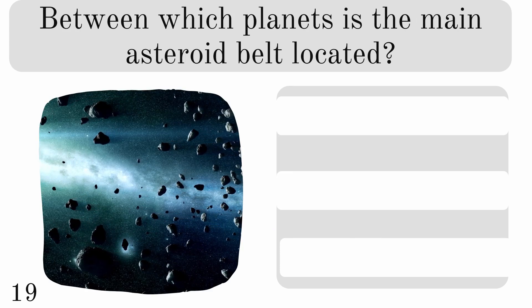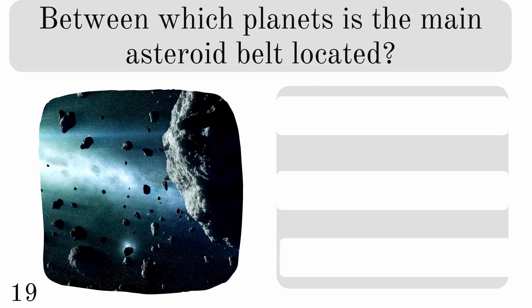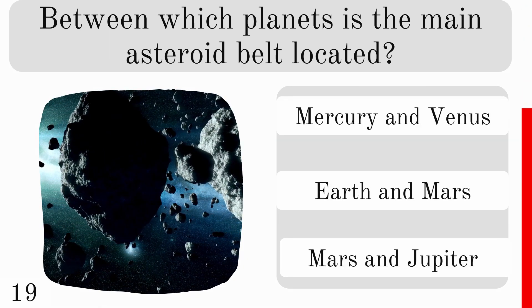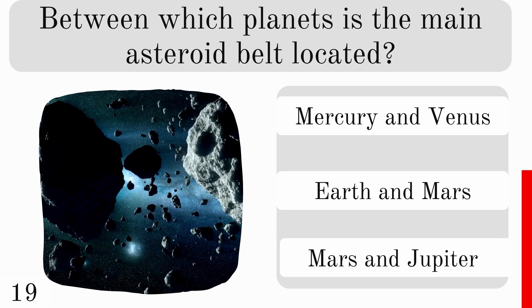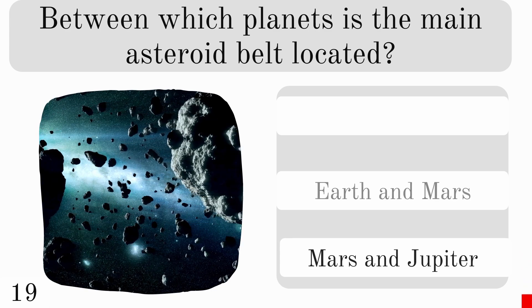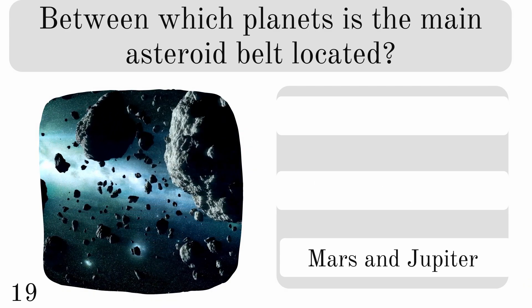Between which planets is the main asteroid belt located? Mercury and Venus, Earth and Mars, or Mars and Jupiter? And the answer is it's between Mars and Jupiter.